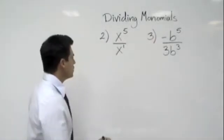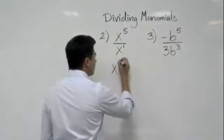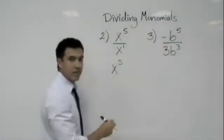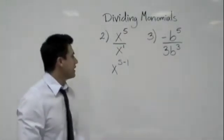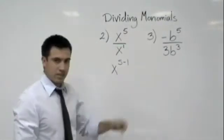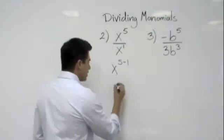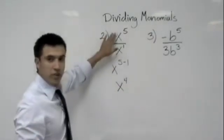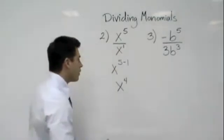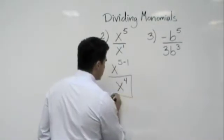How would we write that? Well it's really just saying x to the fifth, we take the numerator and we subtract the exponent of the denominator. So that would be x to the fifth minus the first power, which is just x to the fourth. And it stays at the numerator, right? So it would just be x to the fourth power, that would be our answer here.